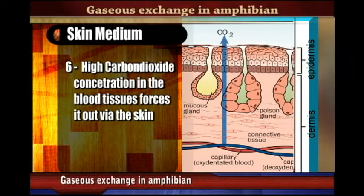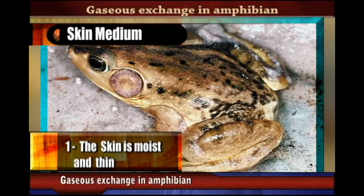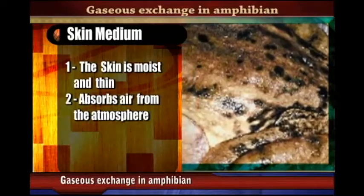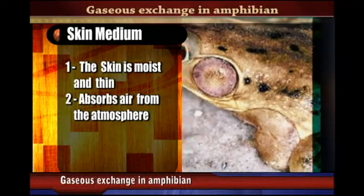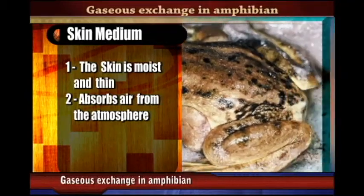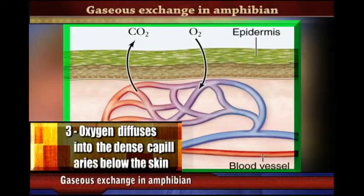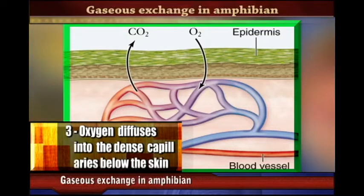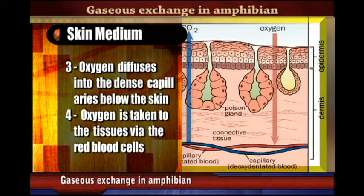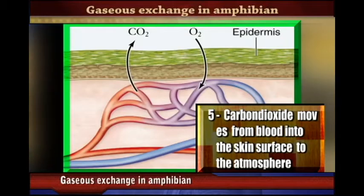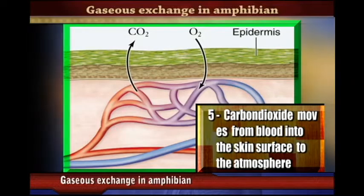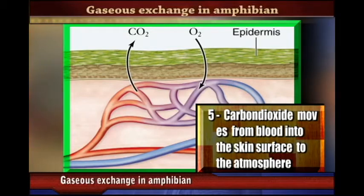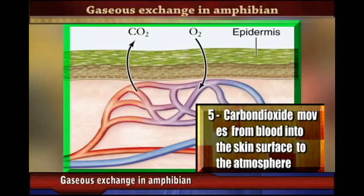In summary, amphibians have a moist and thin skin. Because of the moisture, oxygen easily dissolves on the skin surface, and because of the thin surface, it diffuses into the blood capillaries below the skin. Oxygen is transported in blood to the tissues, and carbon dioxide is removed from the blood to the skin surface and released into the atmosphere.